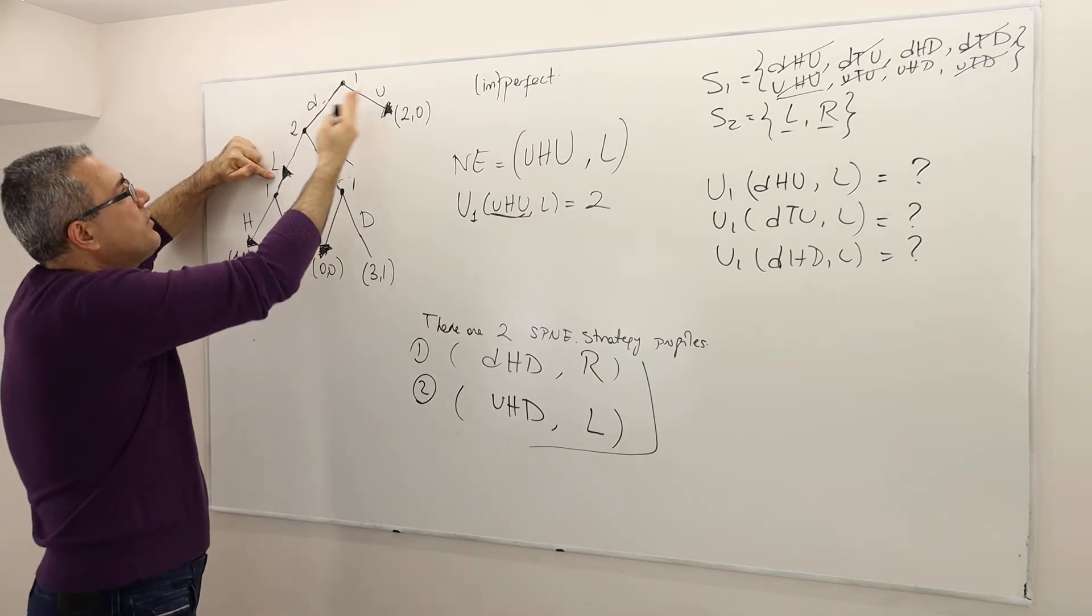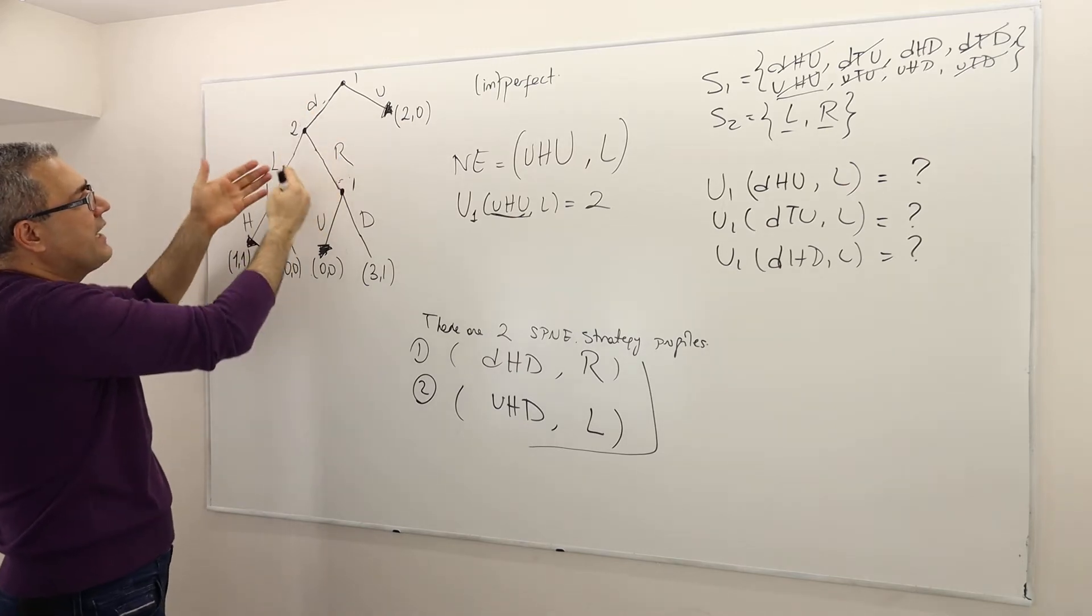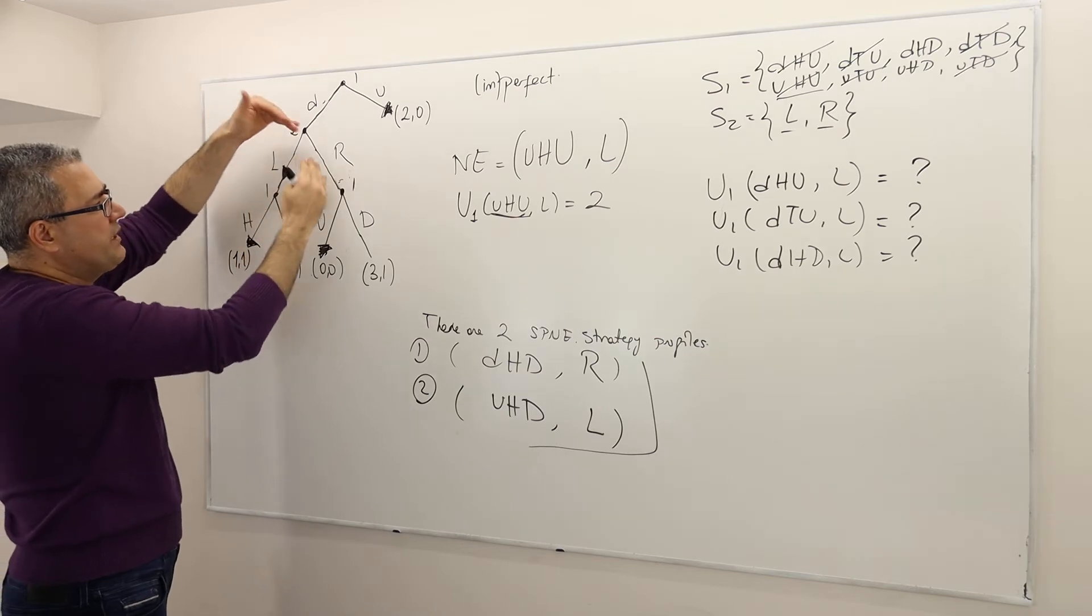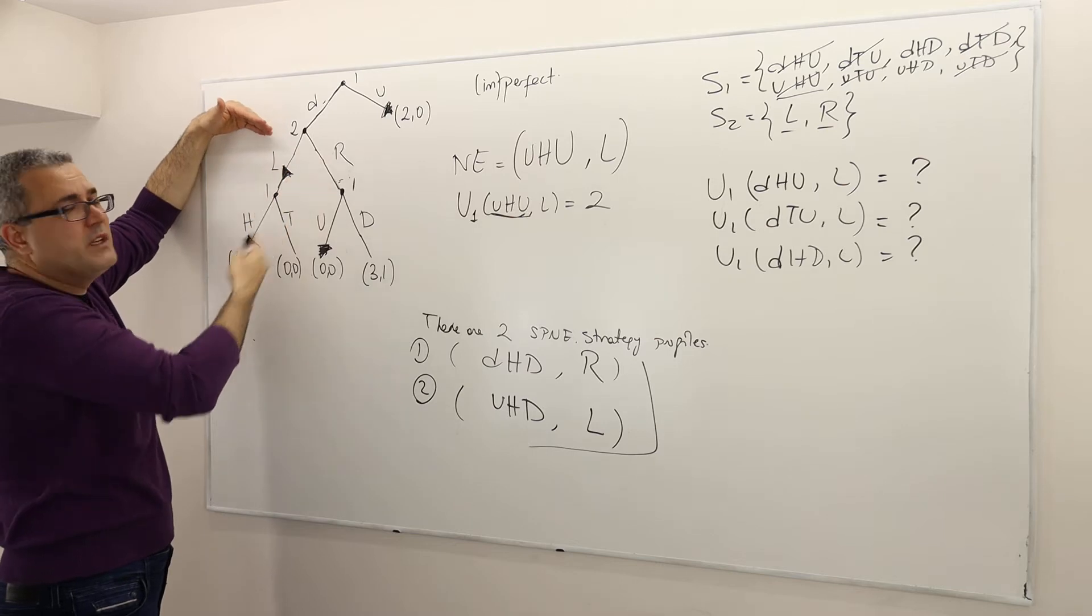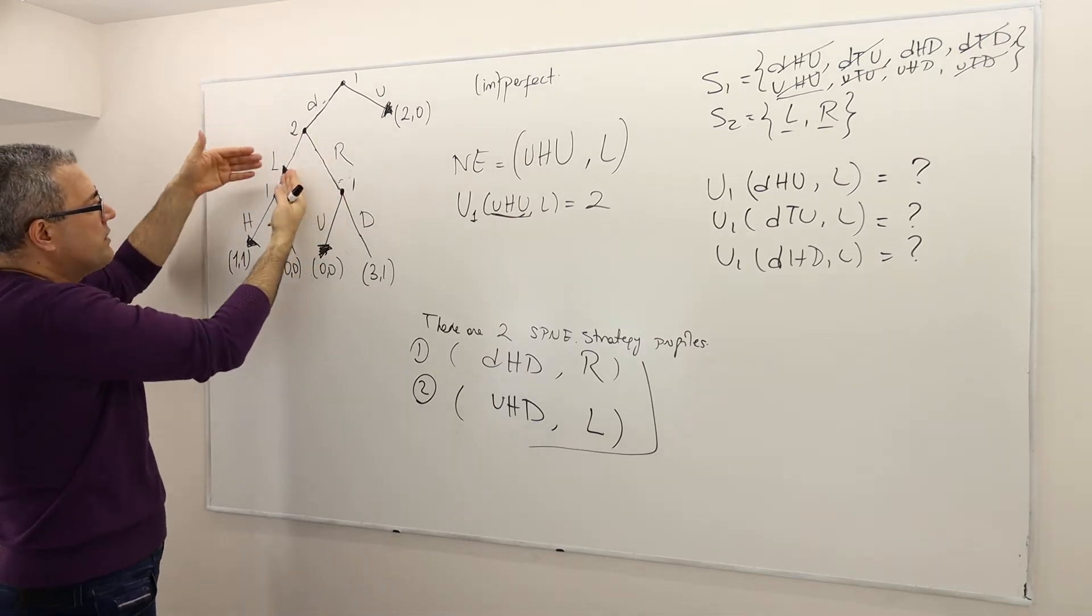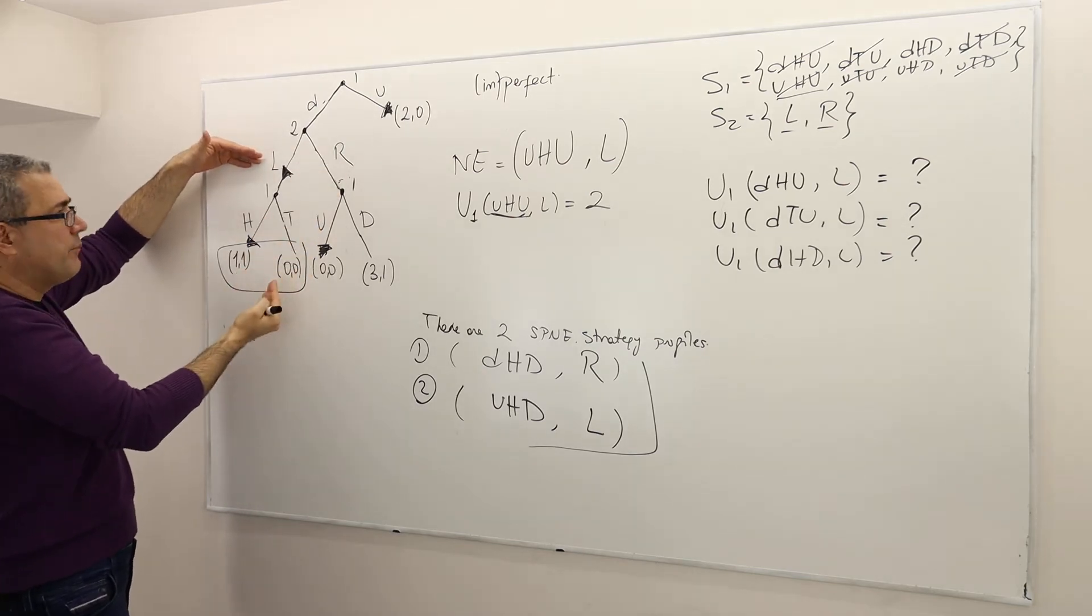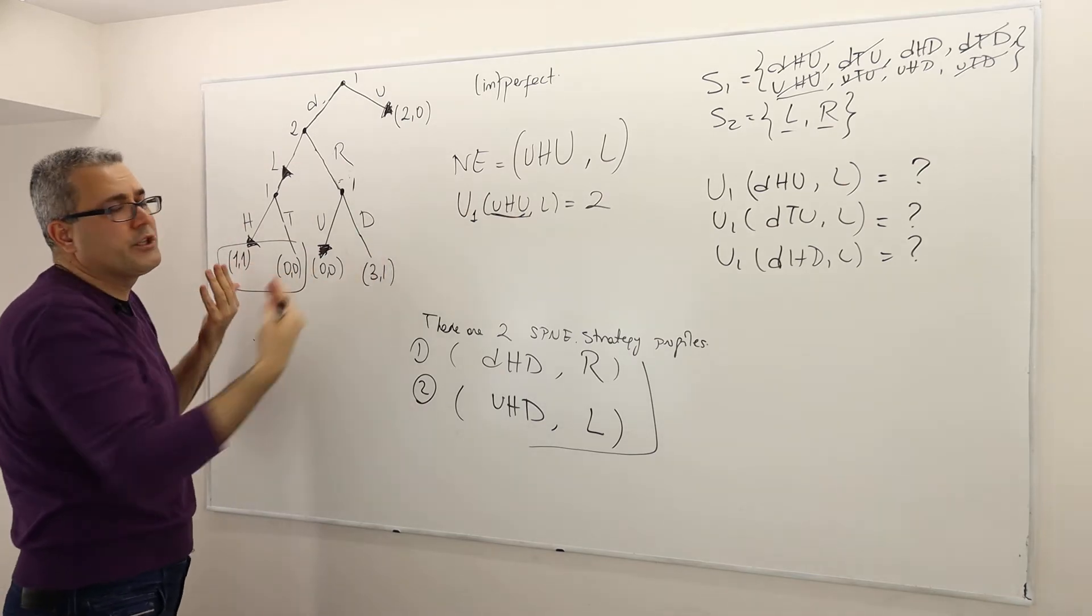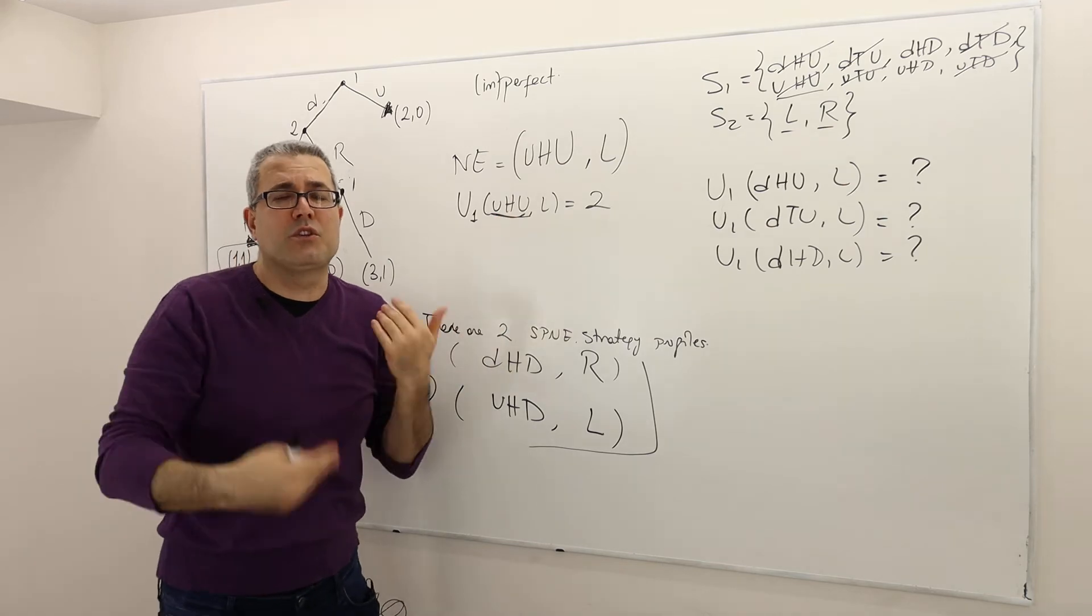Why not? Well, whatever player one does here, eventually, it's going to come down to the second player's choice. And unless she is choosing R, there's no way player one can get three. And she is, player two, is not choosing R. She is playing L. So given that player two is playing L, the payoff player one is going to end up, if he plays D instead of U, is either one or zero. Both are worse than two. So UHU is the best response to L.